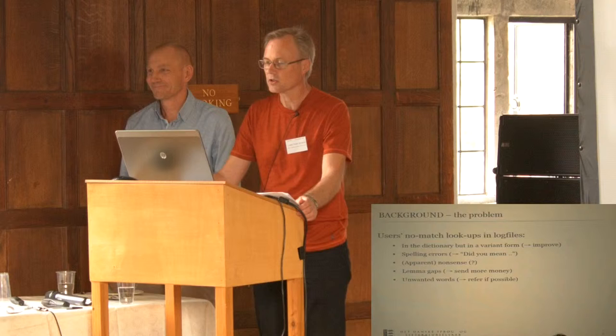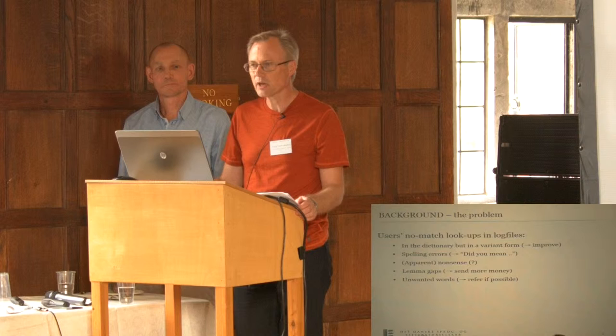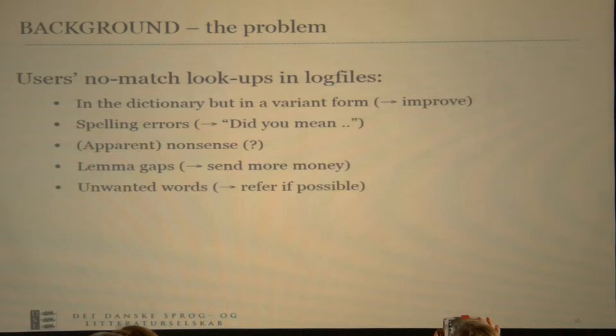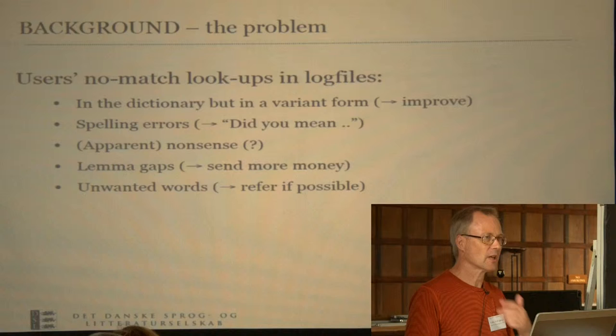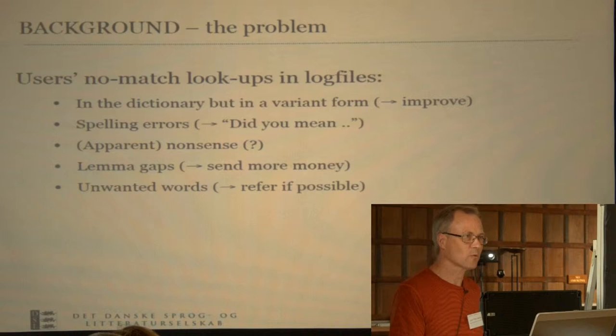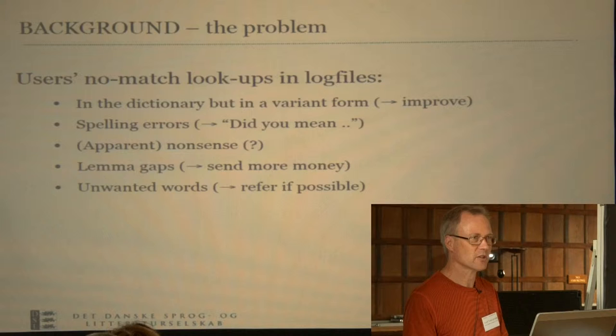Here is just an overview: when people look for words and don't get a match, there are different types of entries or query strings. They may look up a word but not get a match because even if the word is in the dictionary they have entered a different form — the solution is to improve your full-form list. Another common type is spelling errors; people don't always know the correct spelling, so the solution is to introduce a 'did you mean' algorithm, or improve the existing one, to provide them with an answer.